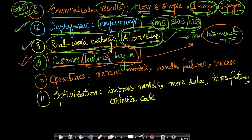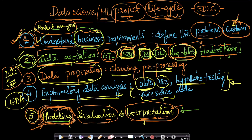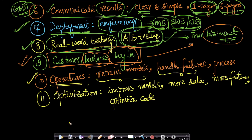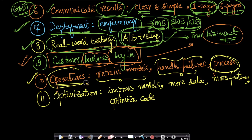The next stage is operationalization. This means defining how and when to retrain your models, how to handle failures in any part of your pipeline — whether SQL queries failing or modeling pipelines breaking — and defining the overall process around model retraining and failure handling.